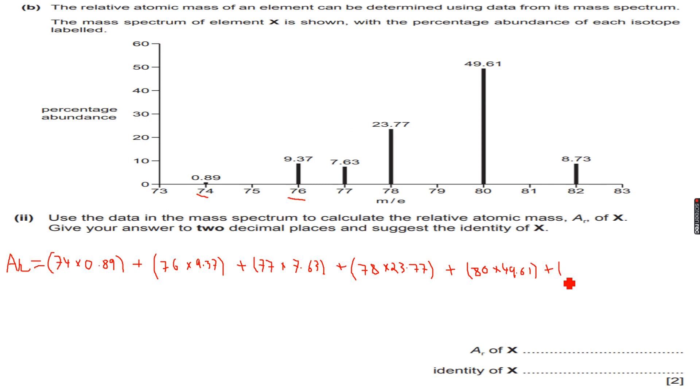Plus the last one, 82 times 8.73. So we have added all the isotopes multiplied with the percentage abundances, and all of this will be over 100 because all the percentages add up to 100.